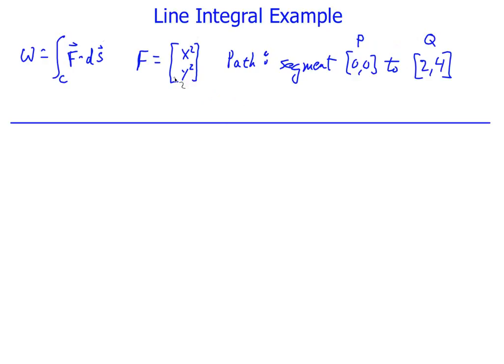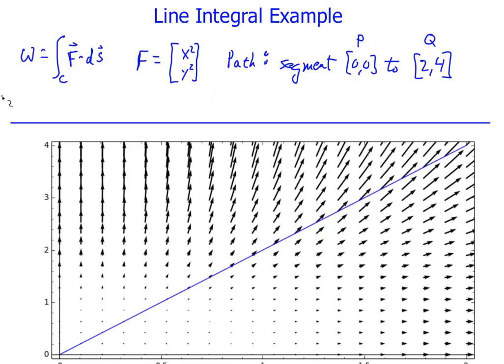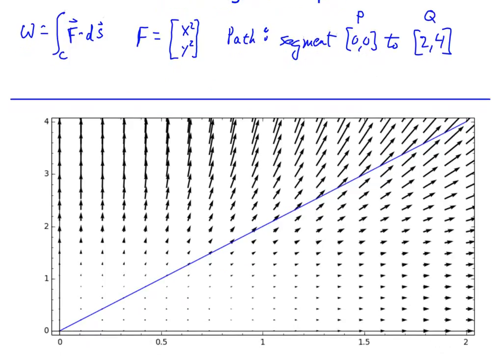Now this particular vector field, what is that all about? I'll show you a picture. Here I have plotted the vector field. These are the arrows. Notice that my axes go from 0 to 4 in y and 0 to 2 in x. That's so I can at least get the entire path on here. The path goes from (0,0) to (2,4), and that's this line segment. That's what it was supposed to be. That's what it is.